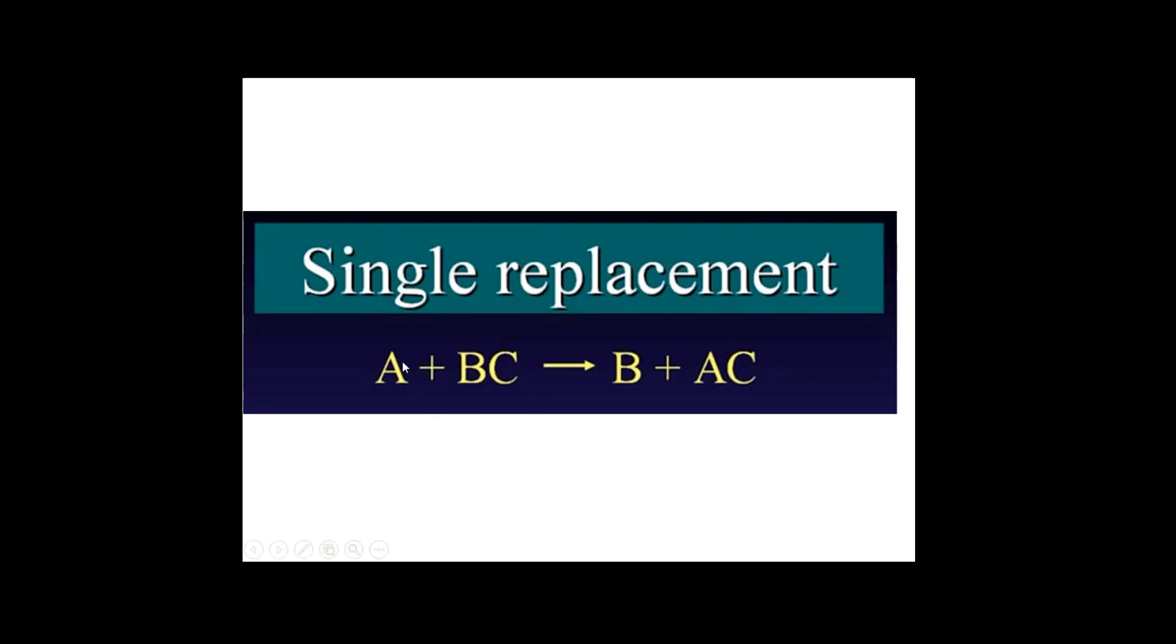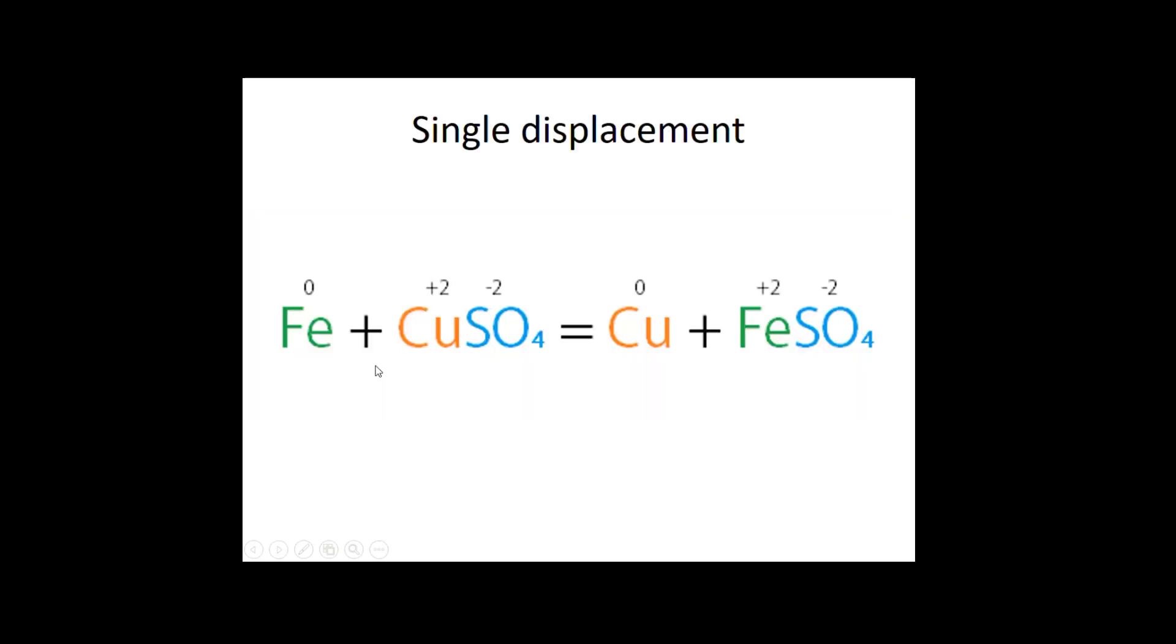In a single replacement reaction, if reactant A and reactant BC have a reaction, the product is B plus AC. So this is single replacement—one element is replaced. For example, single displacement: Fe plus CuSO4 yields Cu plus FeSO4, where copper is displaced.